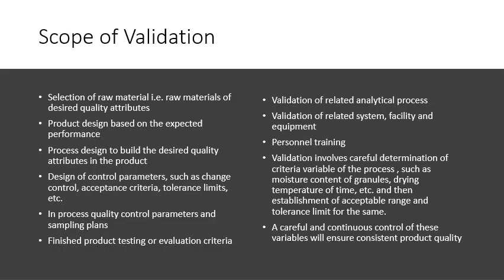The scope of validation includes selection of raw material, product design, process design, design of control parameters, in-process quality control parameter designing, finished product testing or evaluation criteria designing, validation of related analytical processes, related systems, facility equipment, personnel training, careful determination of critical variables of the process, and careful and continuous control of these variables. All of this ensures consistent product quality.